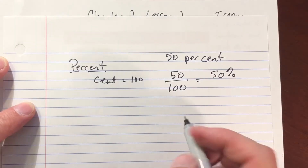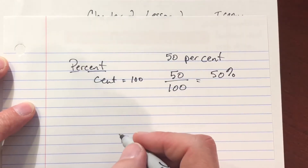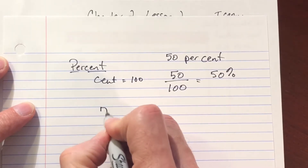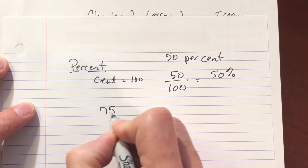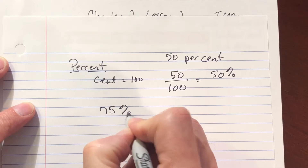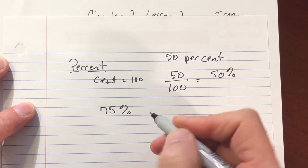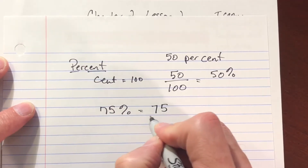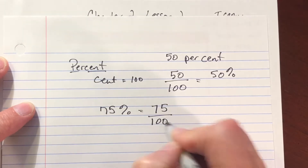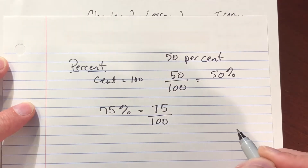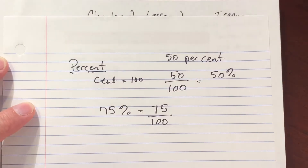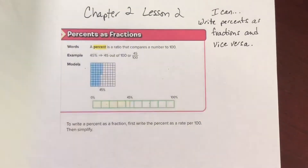So if I want to go with 75 percent, I will write that as a fraction as 75 per 100. That's how we get our per cent. Let's go do some examples here.